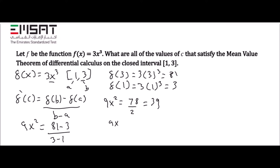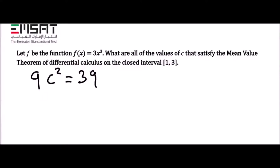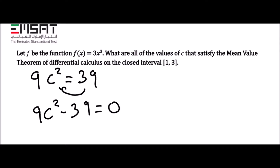Swapping x to c: 9c squared = 39. To find c, set the equation equal to zero: 9c squared minus 39 = 0. We use the calculator by pressing mode 5, 3, where a equals the coefficient of c squared, which is 9; b equals the coefficient of c, which is 0; and c equals negative 39.